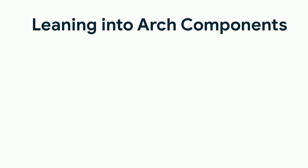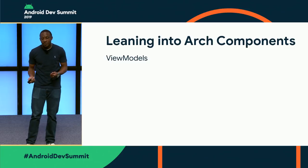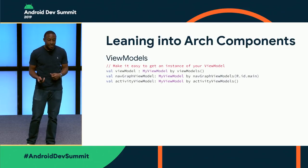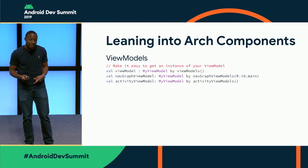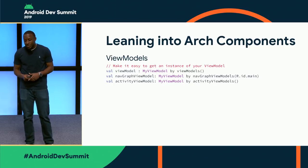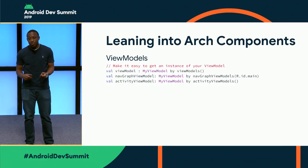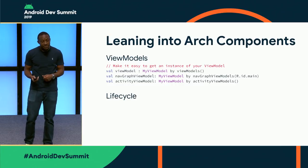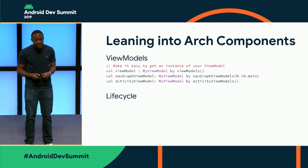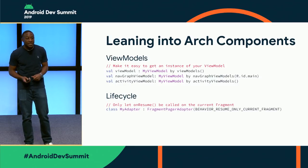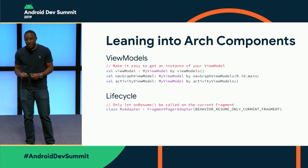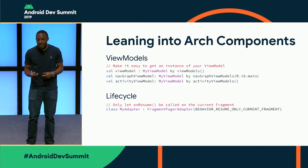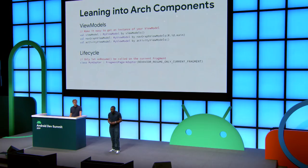Architecture components are something we want to leverage even more going forward. For example, it should be easy to get a ViewModel for your fragment — we created Kotlin property extensions so you can get a ViewModel at the fragment level, nav graph level, or activity level, so your ViewModel is always properly scoped. We're also leaning into the lifecycle — instead of using the custom setUserVisibleHint method, you can now use regular lifecycle methods when adding fragments to a ViewPager adapter. This is how ViewPager 2 works, where only your current fragment will be resumed.